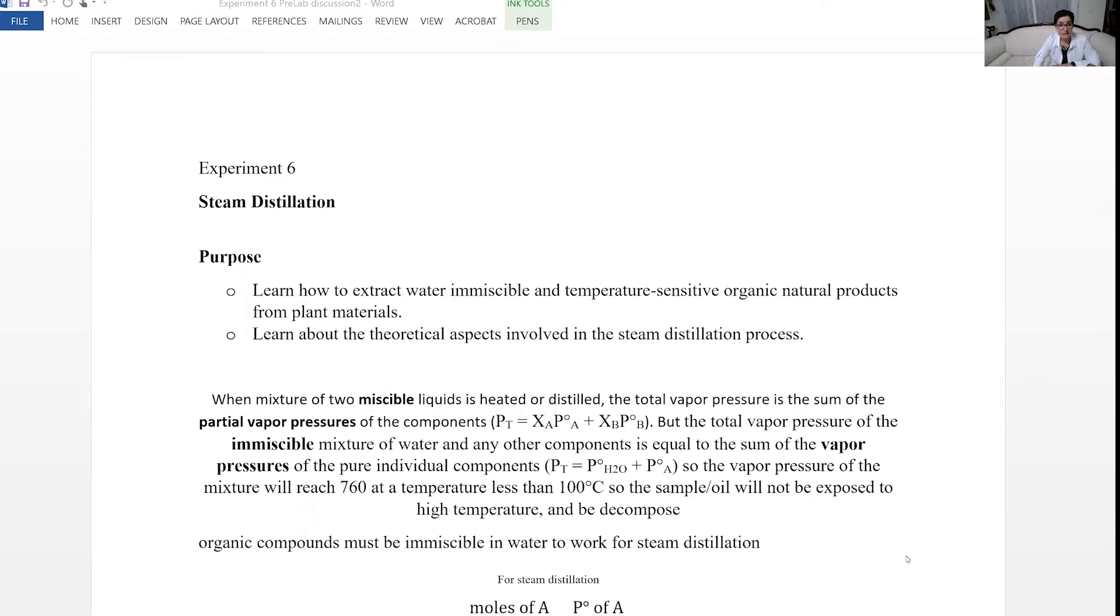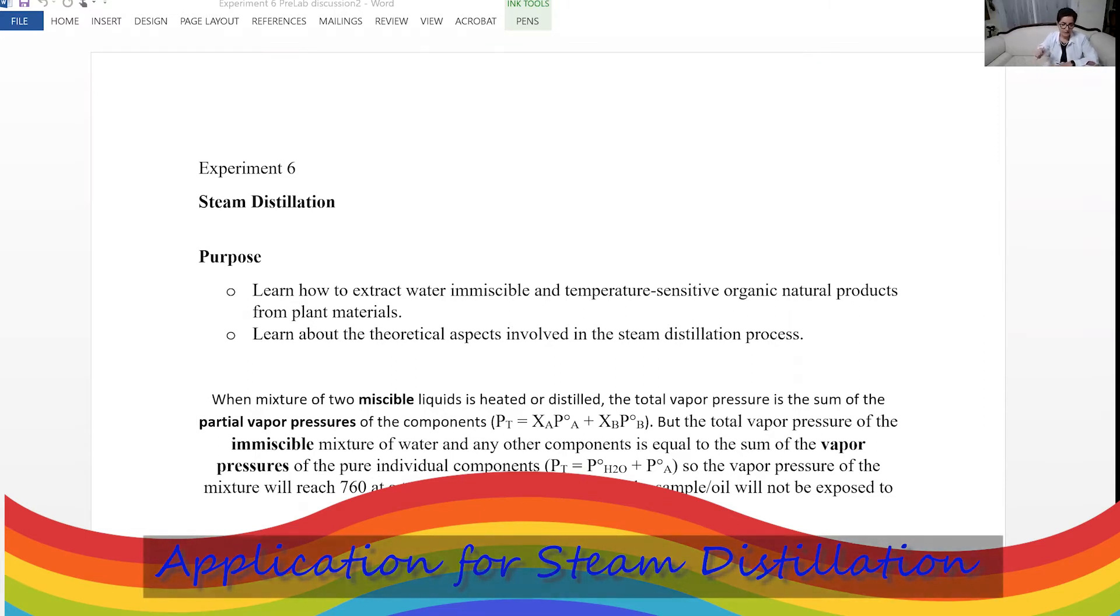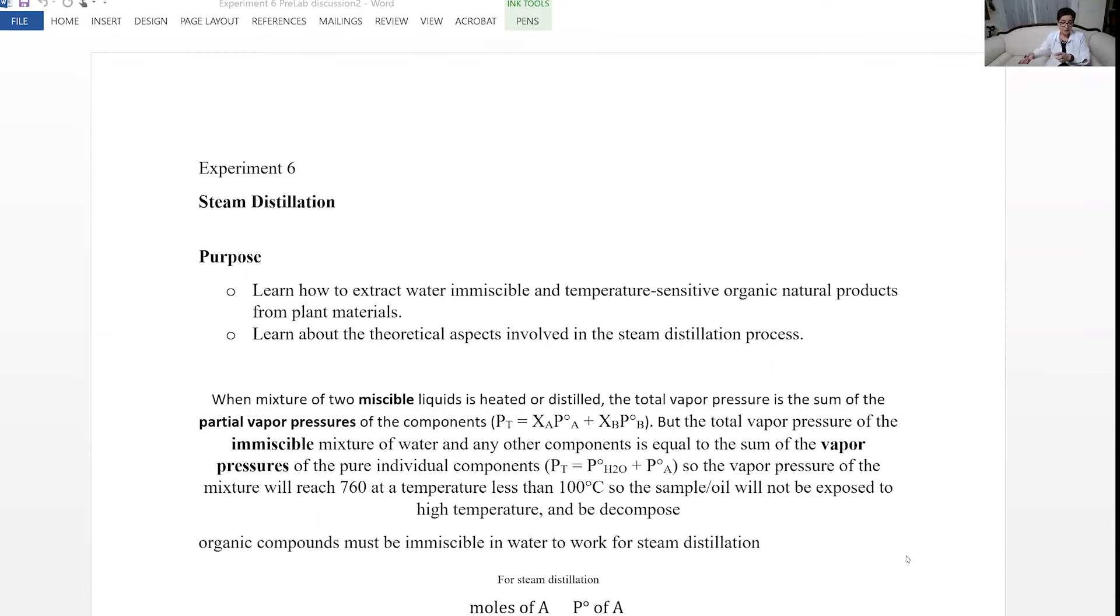The purpose of this experiment is to be able to distill organic compounds that are sensitive to temperature and have high boiling points. So we can use steam distillation. A condition for that is that those compounds must be immiscible in water. They cannot dissolve. Like sodium chloride, you cannot do steam distillation with sodium chloride even though it has very high boiling point. So you can use this for immiscible or water-immiscible temperature-sensitive organic natural products.